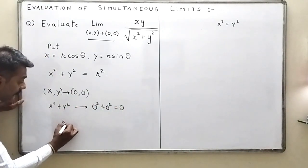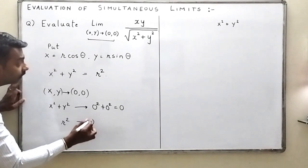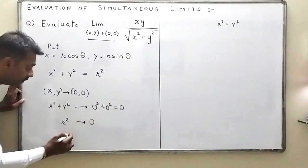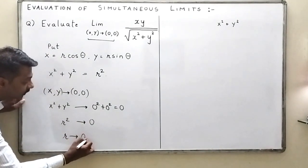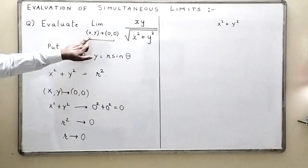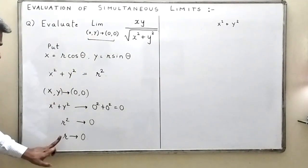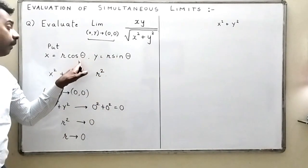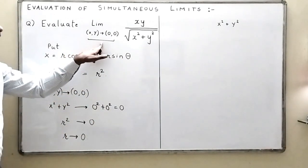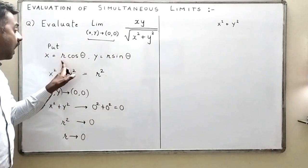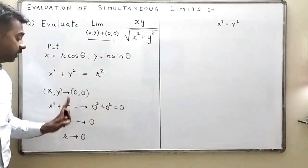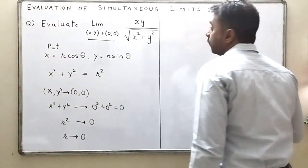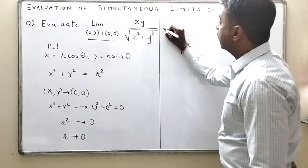This means r² is tending to 0, because r² is nothing but x² + y². So r² tending to 0 means r is tending to 0. So (x,y) → (0,0) is equivalent to r → 0. We are not saying anything about θ — it just means r is tending to 0.